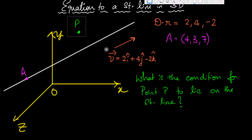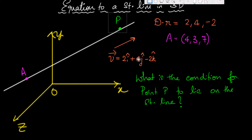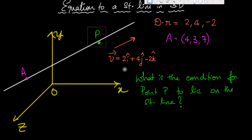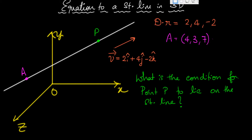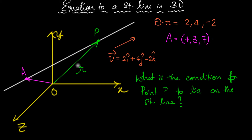Not all points lie on this straight line — some are above, below, or behind it. Only certain points satisfy the condition of lying on the line. To find this condition, I'm going to draw position vectors. Here is position vector R for point P, and vector A for point A. A is fixed; R is variable. As point P moves along the line, R keeps changing. What is the condition on R so that point P lies on this straight line?